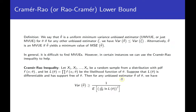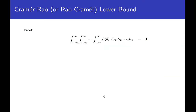For any unbiased estimator theta-hat of theta, the variance of theta-hat must be greater than or equal to the reciprocal of the expected value of the square of the partial derivative with respect to theta of the log-likelihood function. This expression is the Cramér-Rao lower bound. We'll also derive another way to write this expression toward the end. Let's go through the proof.